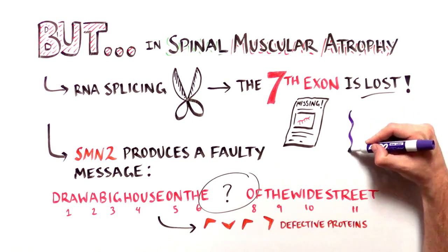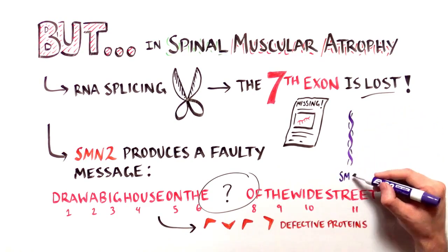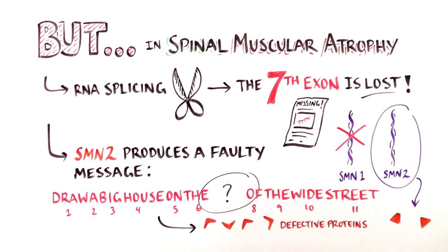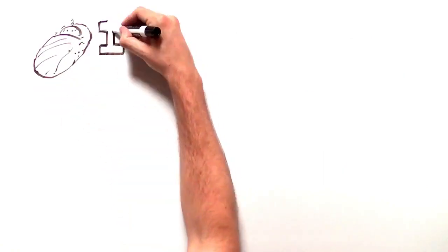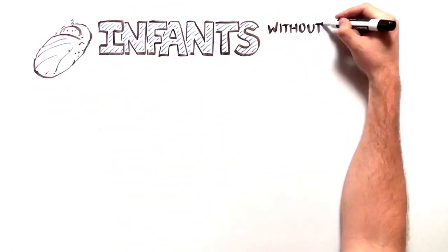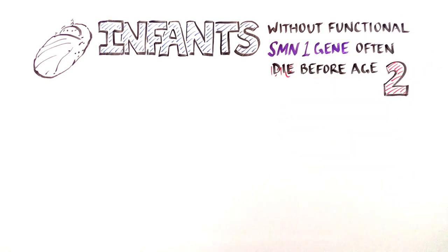SMA patients have to rely solely on the SMN2 gene to produce the survival of motor neuron protein. But due to exon skipping, not enough usable protein is made to support normal muscle development. Infants born with the most severe form of SMA often don't make it to their second birthday. But researchers have been studying how to fix this splicing problem.